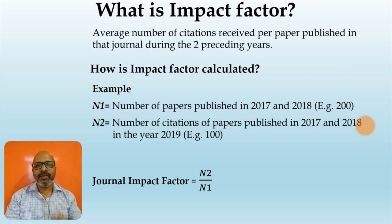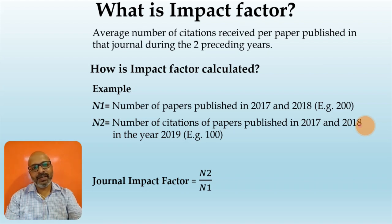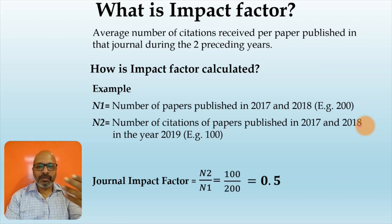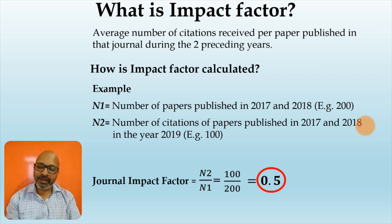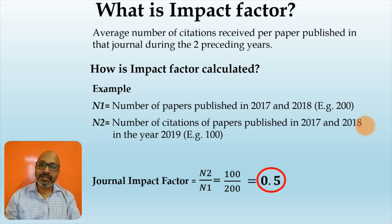The journal's impact factor is calculated by dividing the number of citations N2 by the number of papers published N1. By putting our data into these numbers we have 100 divided by 200, that is 0.5. So 0.5 is the impact factor of that particular journal for that particular year. The impact factor changes every year because the number of citations received for the papers published in the previous 2 years is different every year.